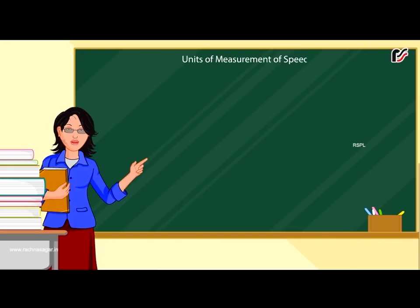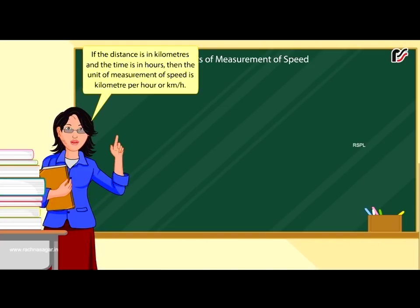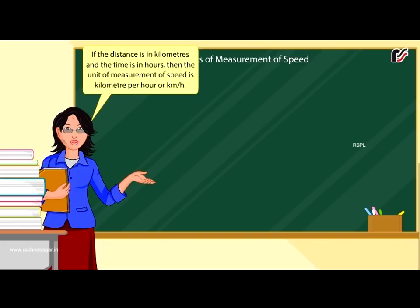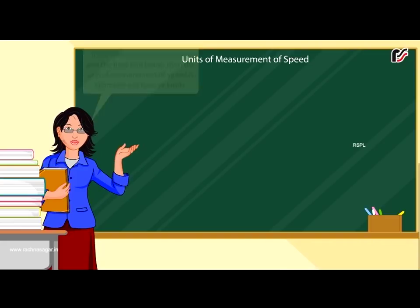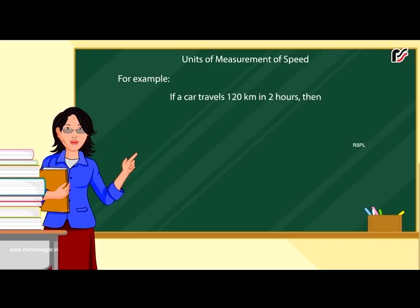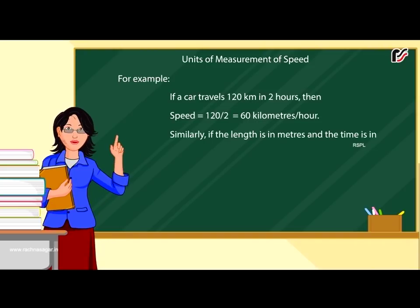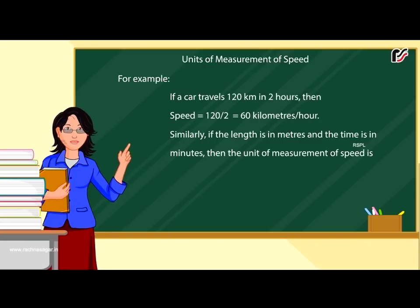Units of Measurement of Speed: Like all other quantities, speed also requires a unit of measurement. If the distance is in kilometres and the time is in hours, then the unit of measurement of speed is kilometre per hour (km/h). For example, if a car travels 120 kilometres in 2 hours, then its speed is equal to 120 divided by 2, which equals 60 km/h. Similarly, if the distance is in metres and the time is in minutes, then the unit of measurement of speed is metre per minute.